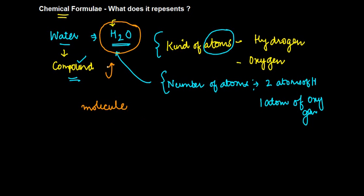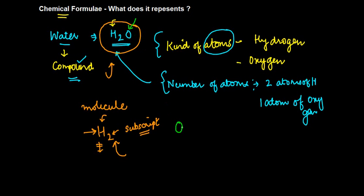When we write H₂, what we mean is that hydrogen is present in this compound. The small number written below — known as the subscript — indicates how many atoms of hydrogen are present. For oxygen, there is nothing written below it, which means there is one atom of oxygen. We do not write O₁; we simply write O to indicate one atom of oxygen.